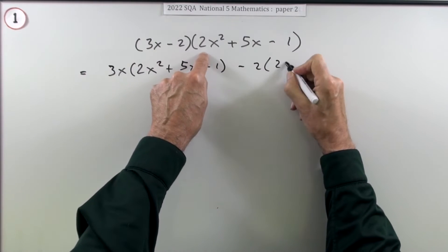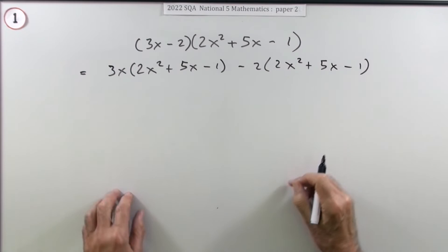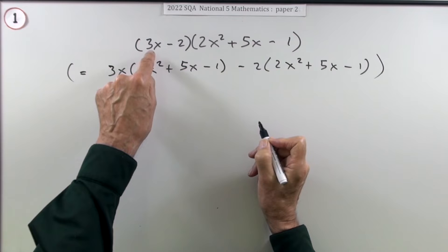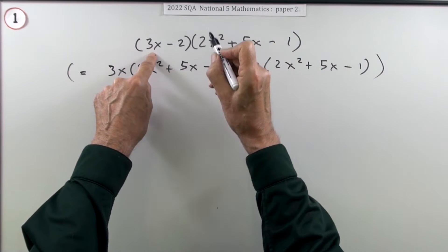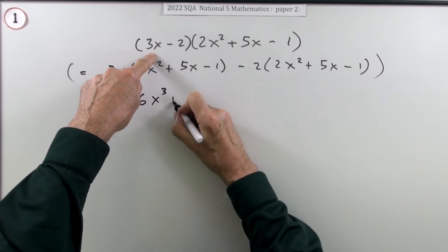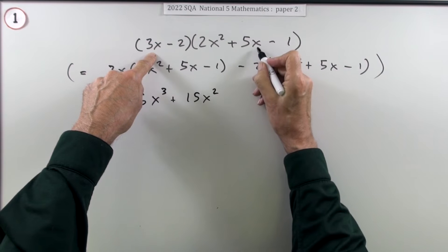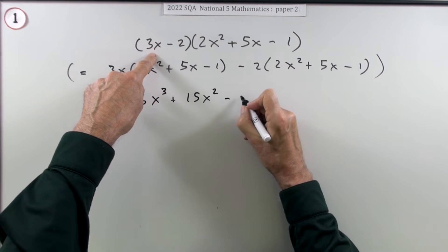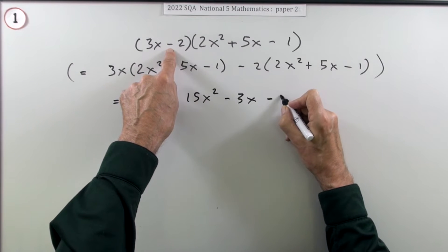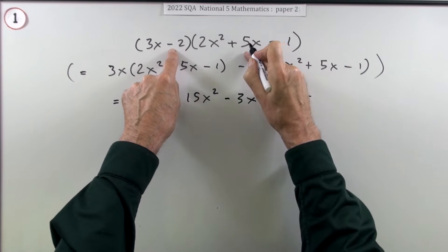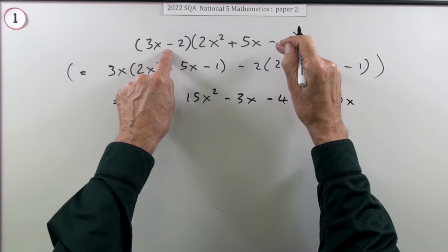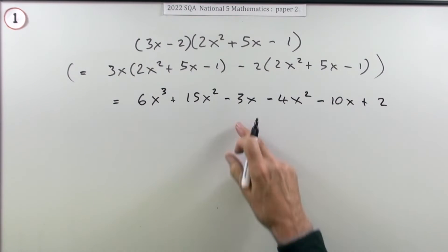You've got 3x to multiply the whole lot and you've got 2 to multiply the whole lot. You don't need to put that line down — put it in a bracket just to keep yourself straight. So: 3x times 2x² is 6x³; 3x times 5x is 15x²; 3x times 1 is 3x but that's got a minus. Then moving to the next bracket: 2 times 2x² is 4x² but it's minus 4x²; 2 times 5x is 10x but minus 10x; and negative times negative gives plus 2.